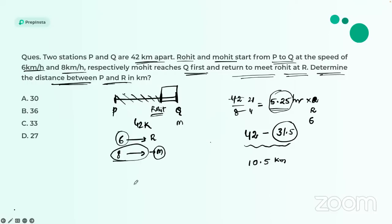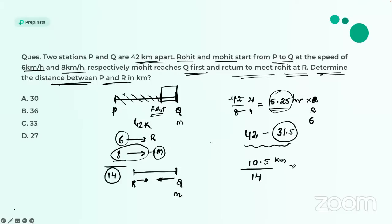Rohit is at 31.5 km and Mohit is at Q (42 km). Mohit now starts back toward Rohit, so they are traveling toward each other. When moving toward each other, speeds are added: 8 + 6 = 14 km/h. The time to cover 10.5 km at 14 km/h is 10.5 ÷ 14 = 0.75 hours. So 0.75 hours is the time until they meet at R.